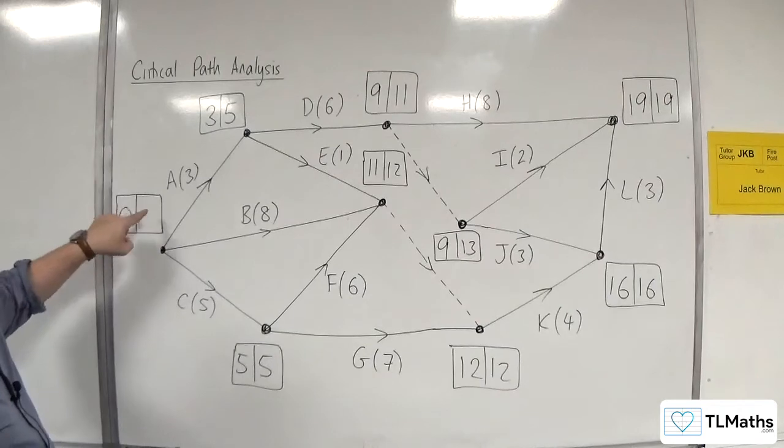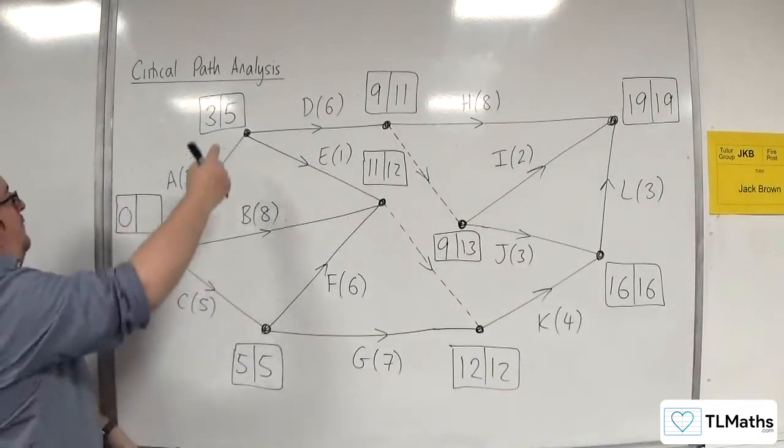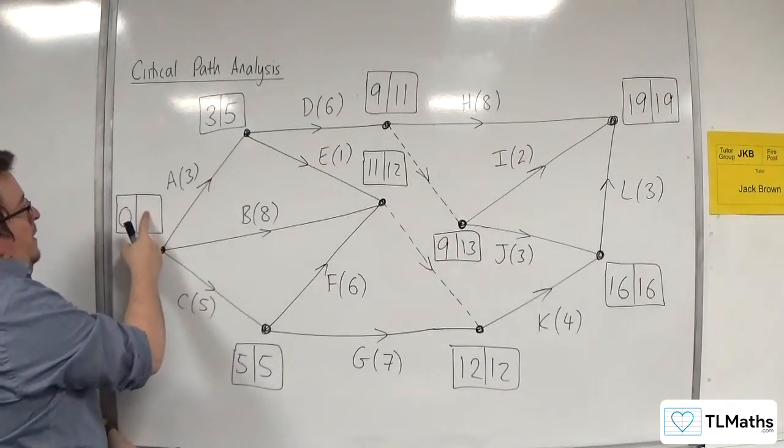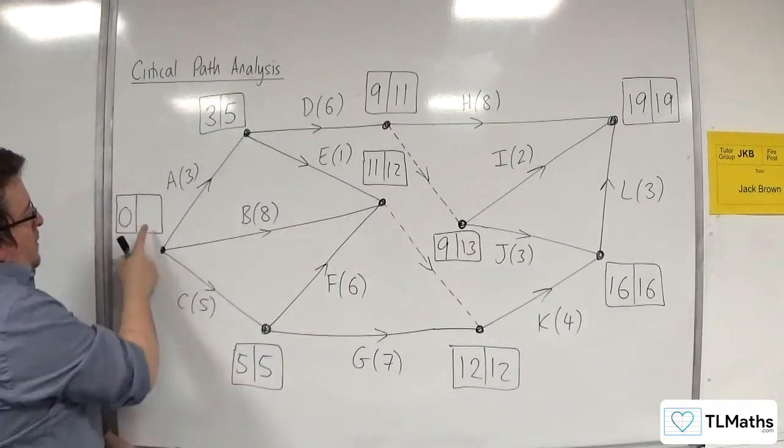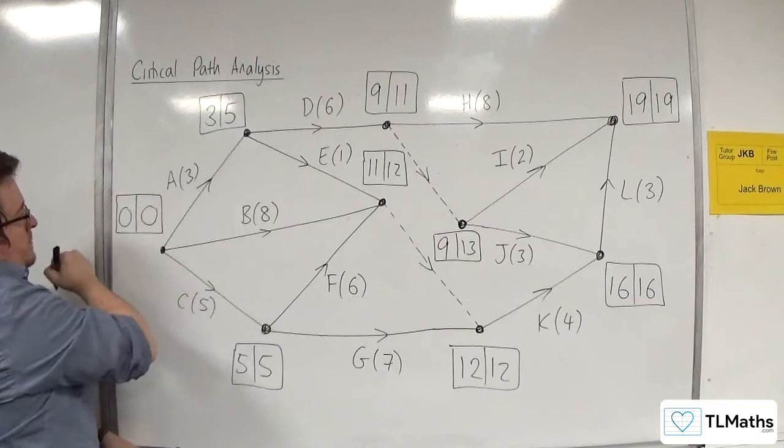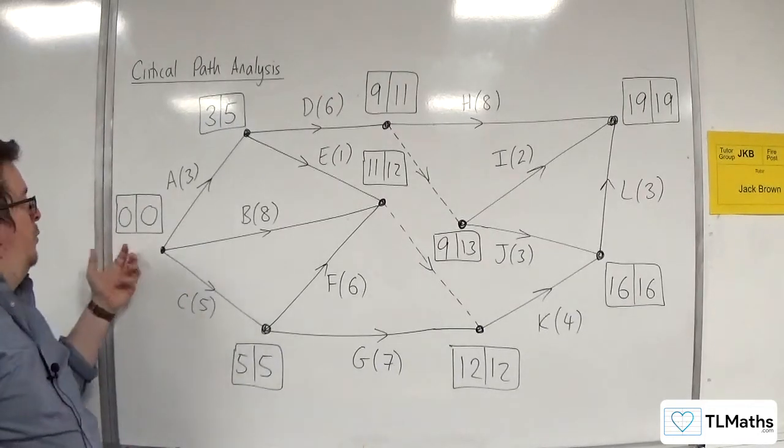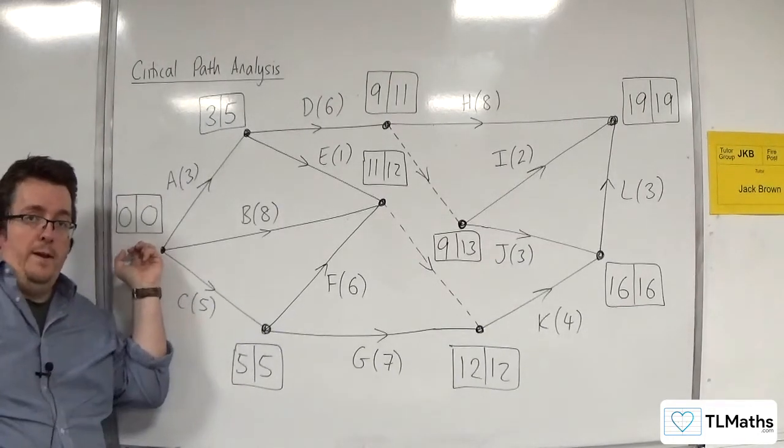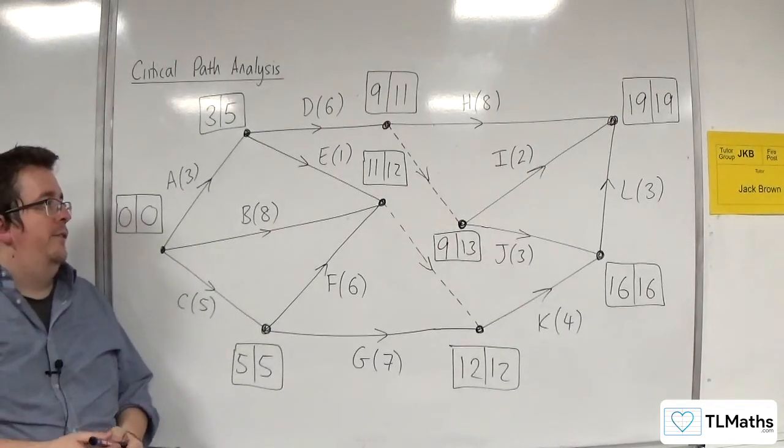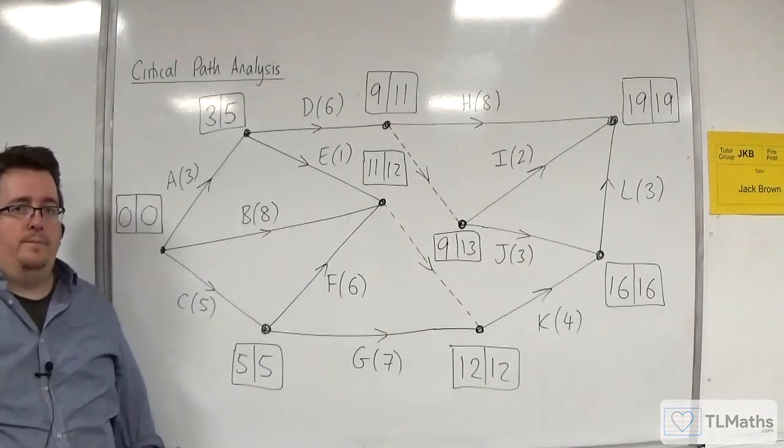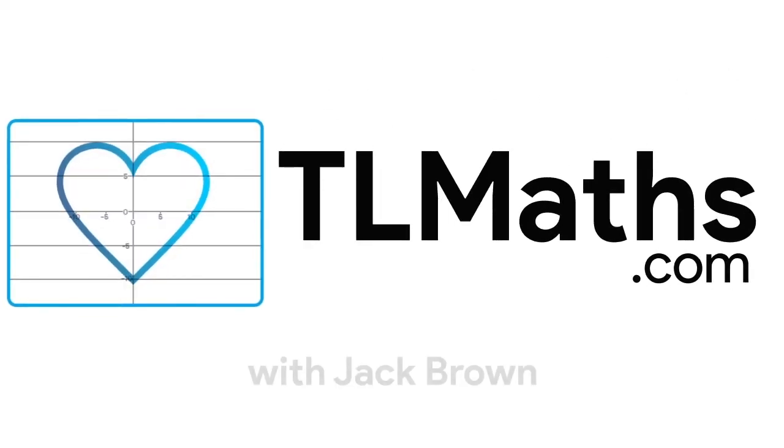Right, then we've finally got this box here. So 5 take away 3 is 2. 12 take away 8 is 4. Or 5 take away 5 is 0. And you might remember that this was always going to be 0 anyway. So that's how we can do the forward and backward pass for this activity network. Good luck.